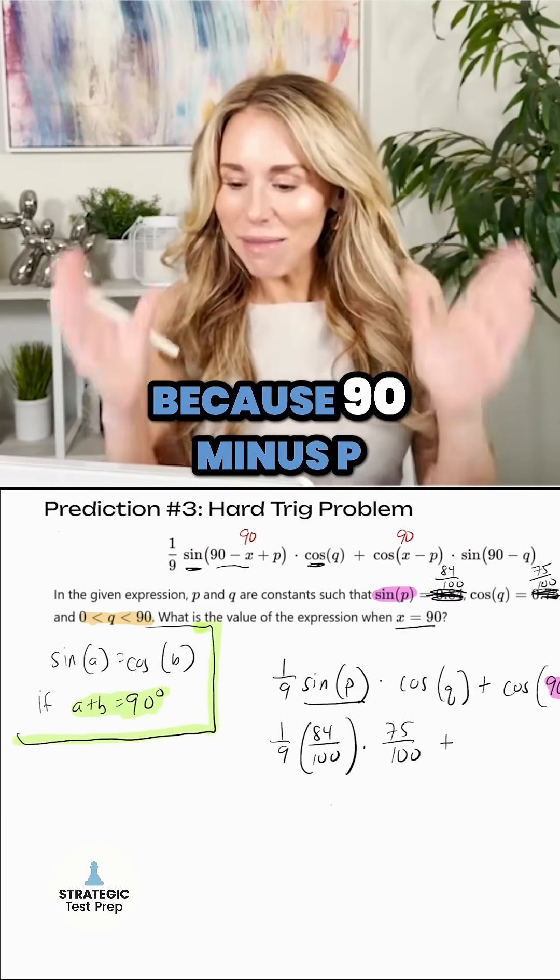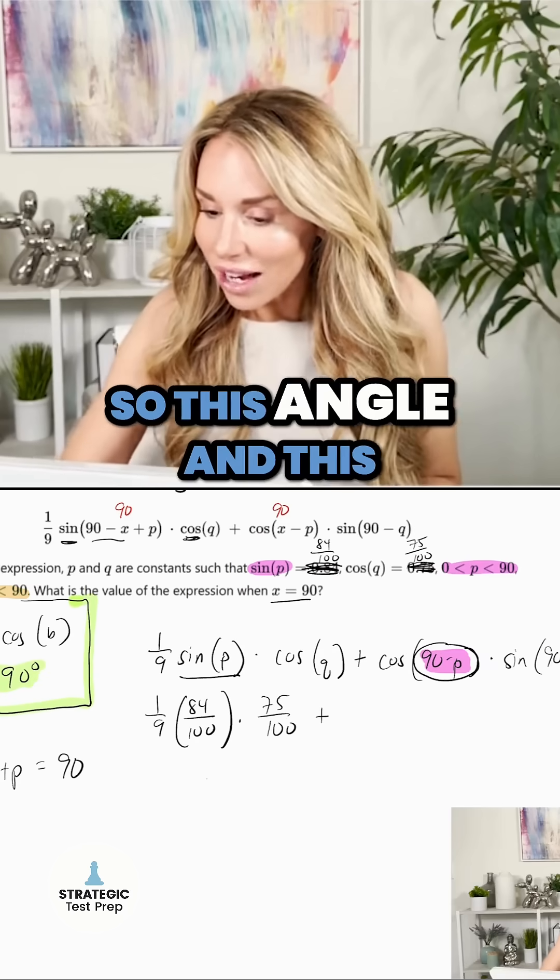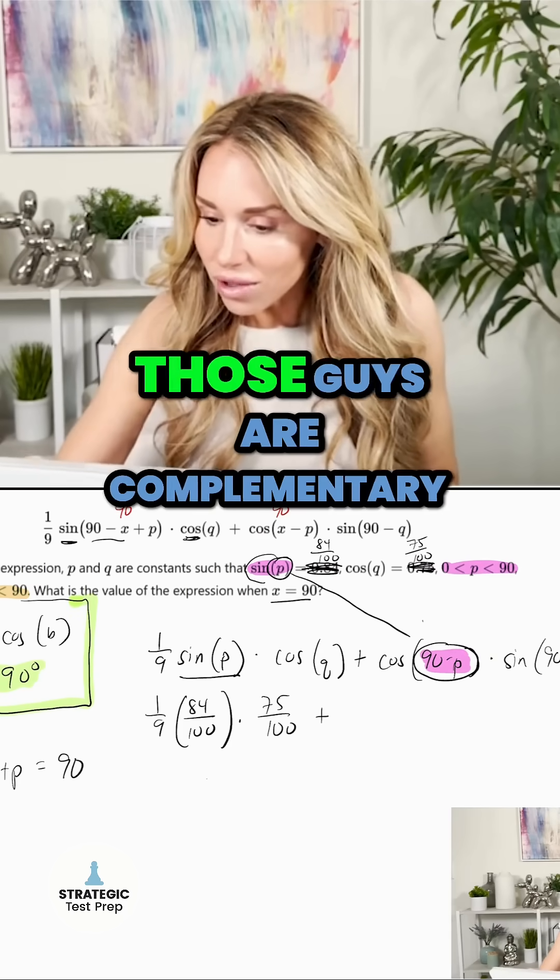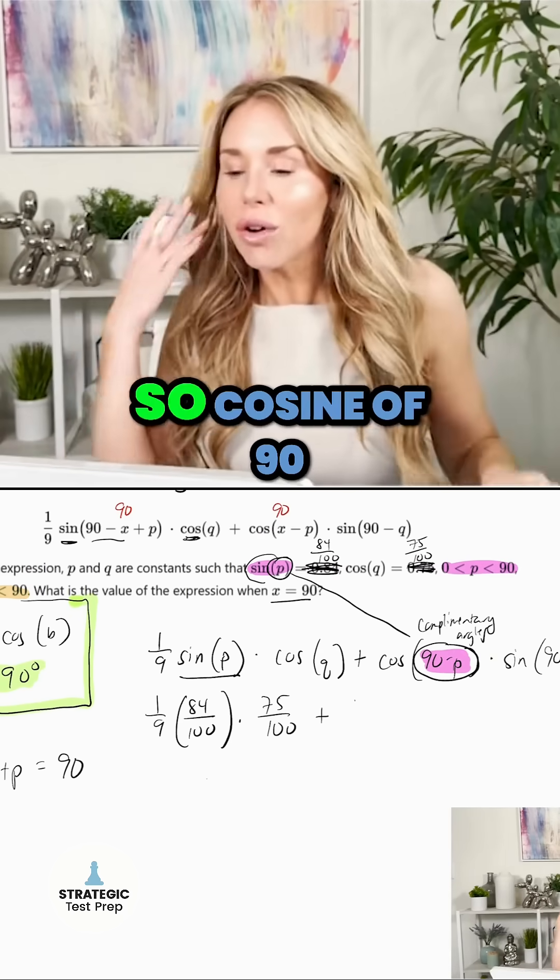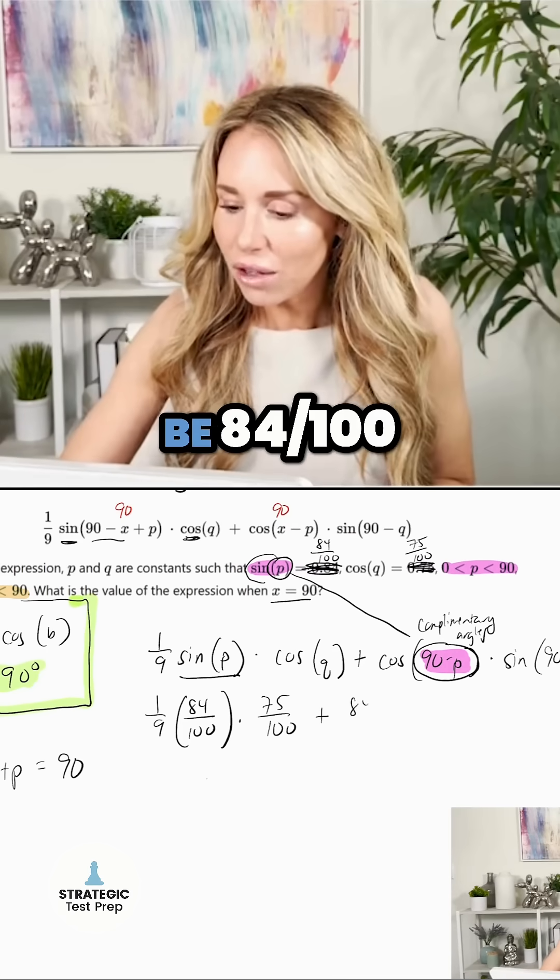Because 90 minus P plus P, that adds to 90 degrees. So this angle and this angle P, those guys are complementary angles. So cosine of 90 minus P is going to equal the same as sine P. So that's going to be 84 over 100.